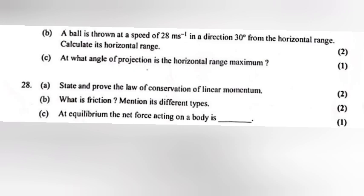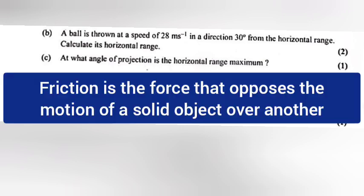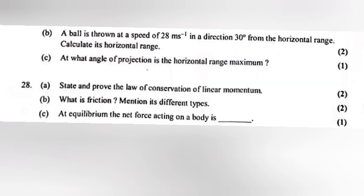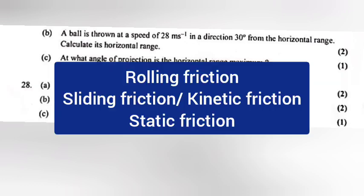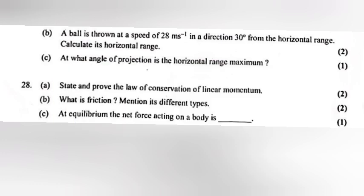28B: What is friction? Mention its different types. Answer: Friction is the force that opposes the motion of a solid object over another. Types of friction: 1. Drawing friction 2. Sliding friction or kinetic friction 3. Static friction. 28C: At equilibrium, the net force acting on a body is dash. Answer: Zero.